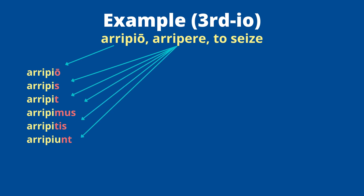For a third -io verb: 'arripio, arripere,' meaning 'to seize.' We know it's third -io because the infinitive is a short 'e-re' and the first piece ends in '-io.' 'Arripio' means 'I seize.' For the rest, take 'arripere,' drop '-re,' giving stem 'arripe.' Flip the 'e' to 'i': arripis, arripit, arripimus, arripitis. Then for the third person plural, it must be '-iunt': arripiunt. So: arripio, arripis, arripit, arripimus, arripitis, arripiunt — I seize, you seize, he/she/it seizes, and so on.